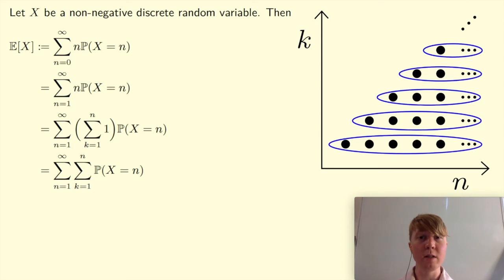So we'll write this now as the sum from k equals 1 to infinity. So k's range is from 1 to infinity. And then when you fix each value of k, n goes from k up to infinity. We've still got the probability X is equal to n.